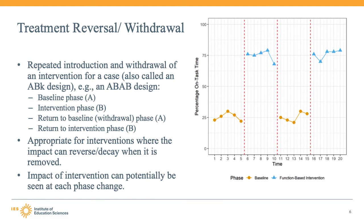By observing three similar changes as a consequence of the presence or absence of treatment, researchers can have greater certainty that the change is in response to treatment, as opposed to a consequence of history or maturation. Because this design involves the repeated application and then withdrawal of treatment, the design is only appropriate when the intervention effect can reverse or decay after it is withdrawn, sometimes referred to as an outcome or intervention being reversible.